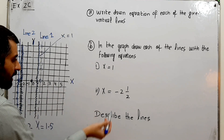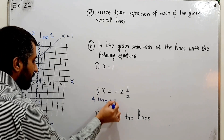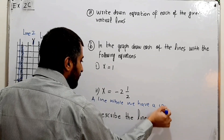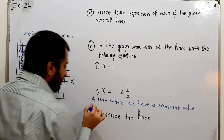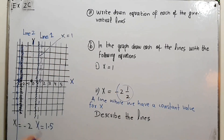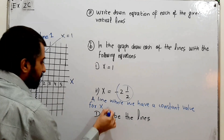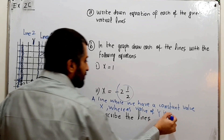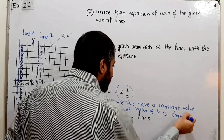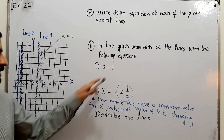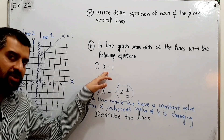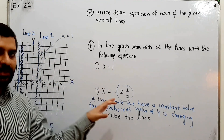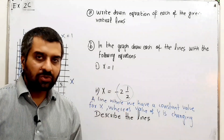To describe these lines: for the line x = -2.5, the value of x is constant at -2.5 throughout the line, whereas the value of y is changing. Similarly for x = 1, x is constant at 1 throughout the line while y is changing. This is the description for these lines. That's Exercise 2C — keep watching, thank you so much.